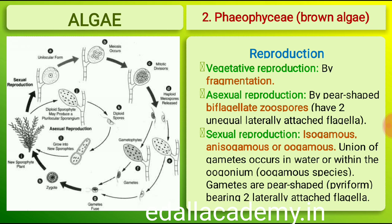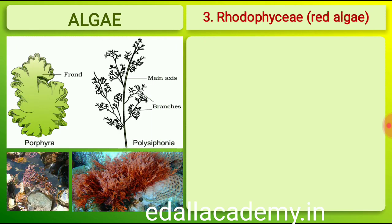The gametes are pyriform (pear-shaped) and bear two laterally attached flagella. The common forms are Ectocarpus, Dictyota, Laminaria, Sargassum and Fucus.